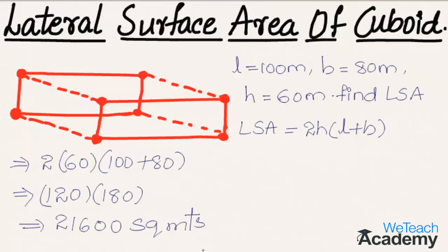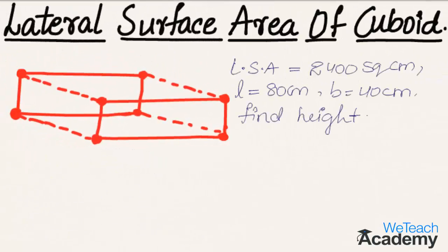Let us proceed and discuss another example. Here the given example is: if lateral surface area equals 2400 square centimeters, length equals 80 centimeters, and breadth equals 40 centimeters, then find height.